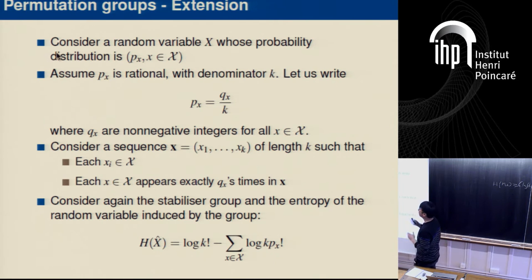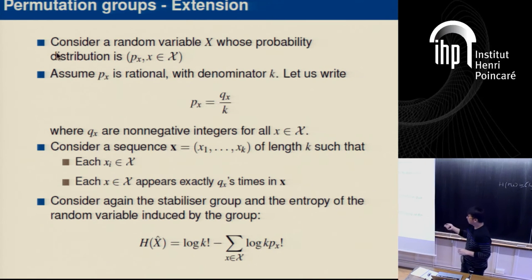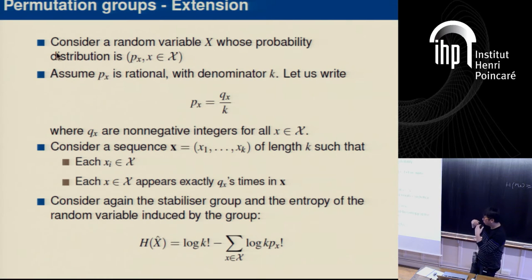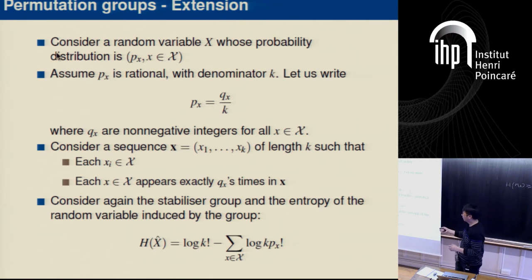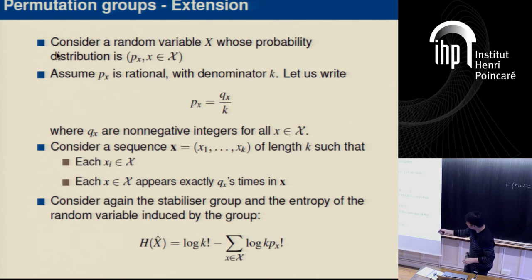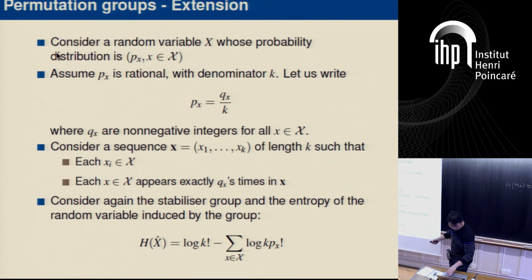Starting with this sequence and applying the formula we obtained earlier, we find that the entropy of the random variable induced by the stabilizer subgroup — the group that keeps this sequence invariant — equals log of k-factorial minus the logarithm of the size of the stabilizer group, which has this specific formula.